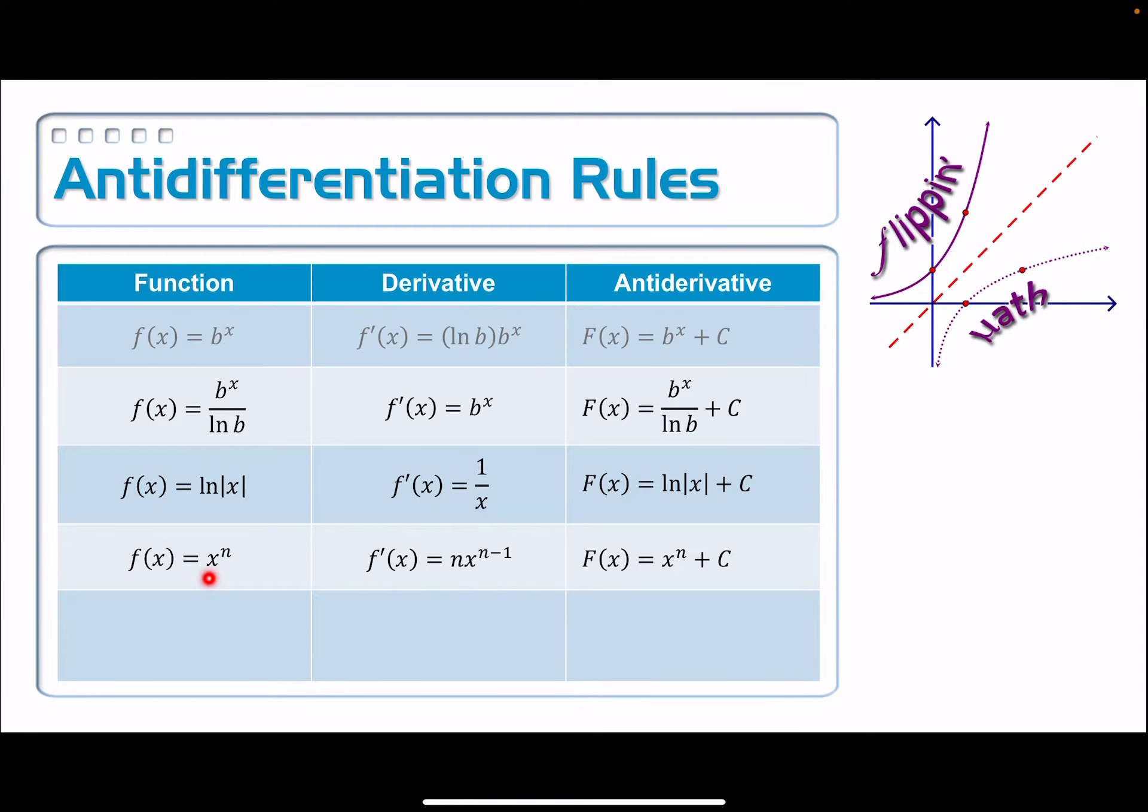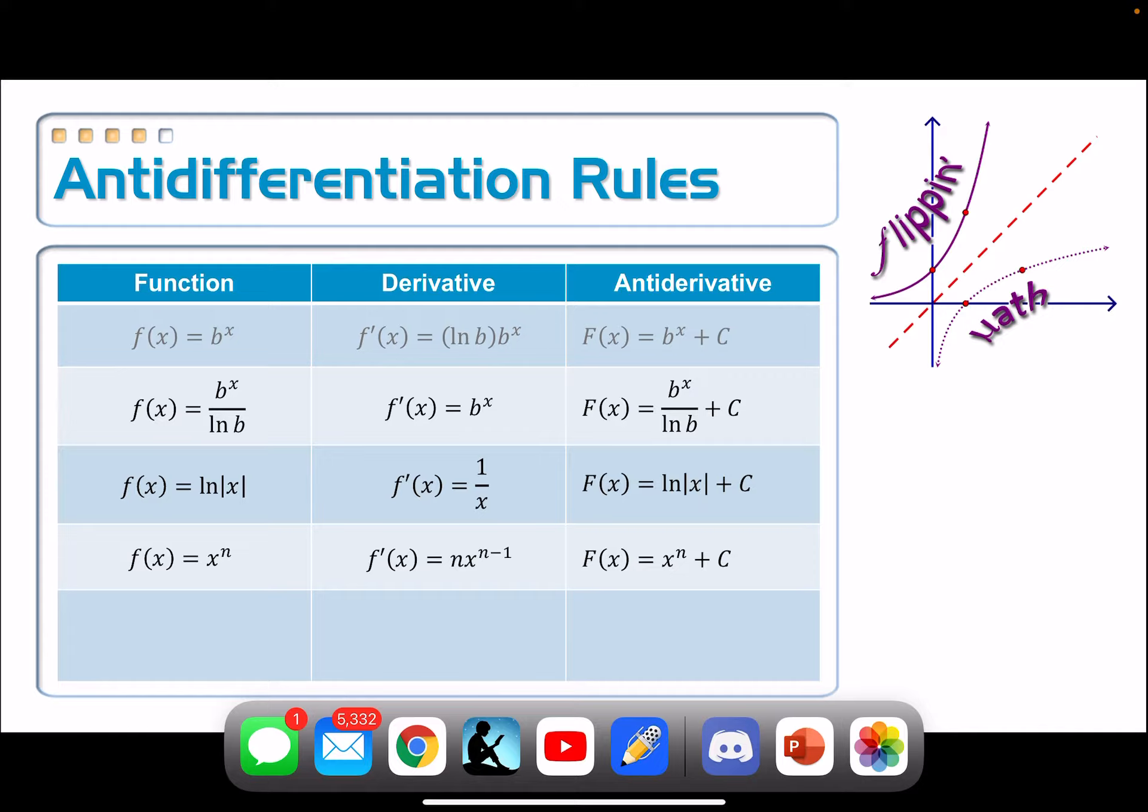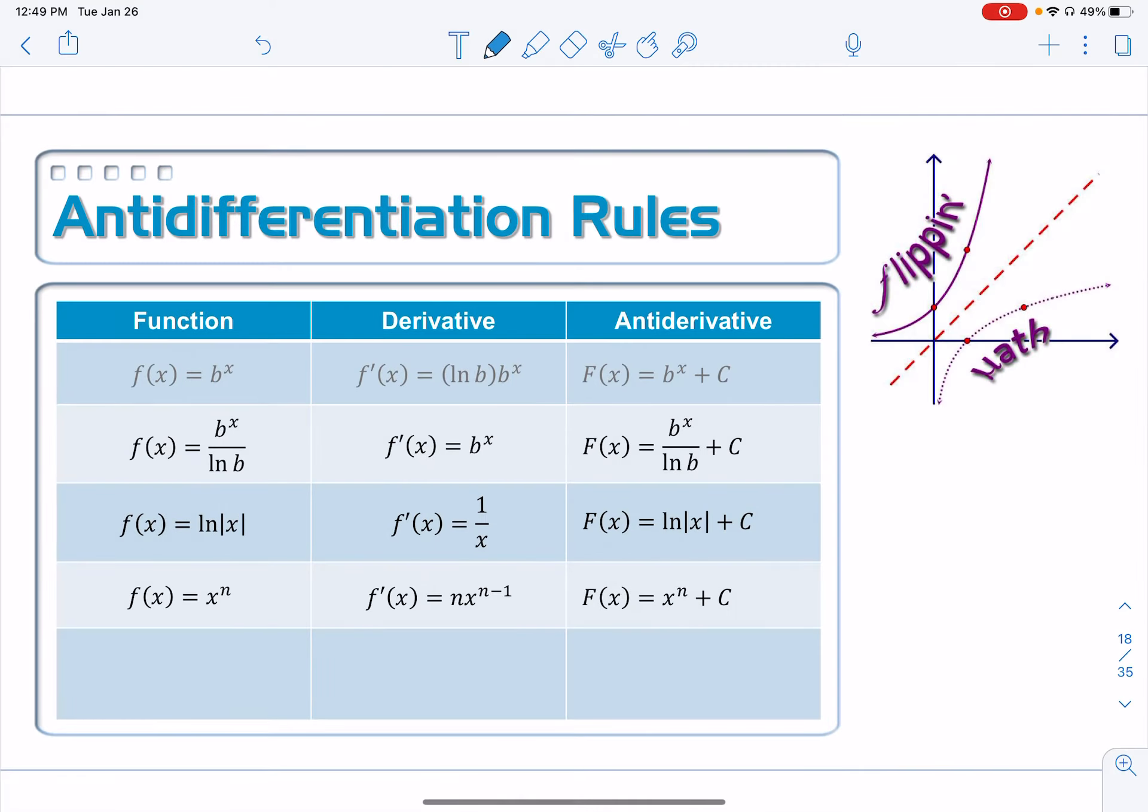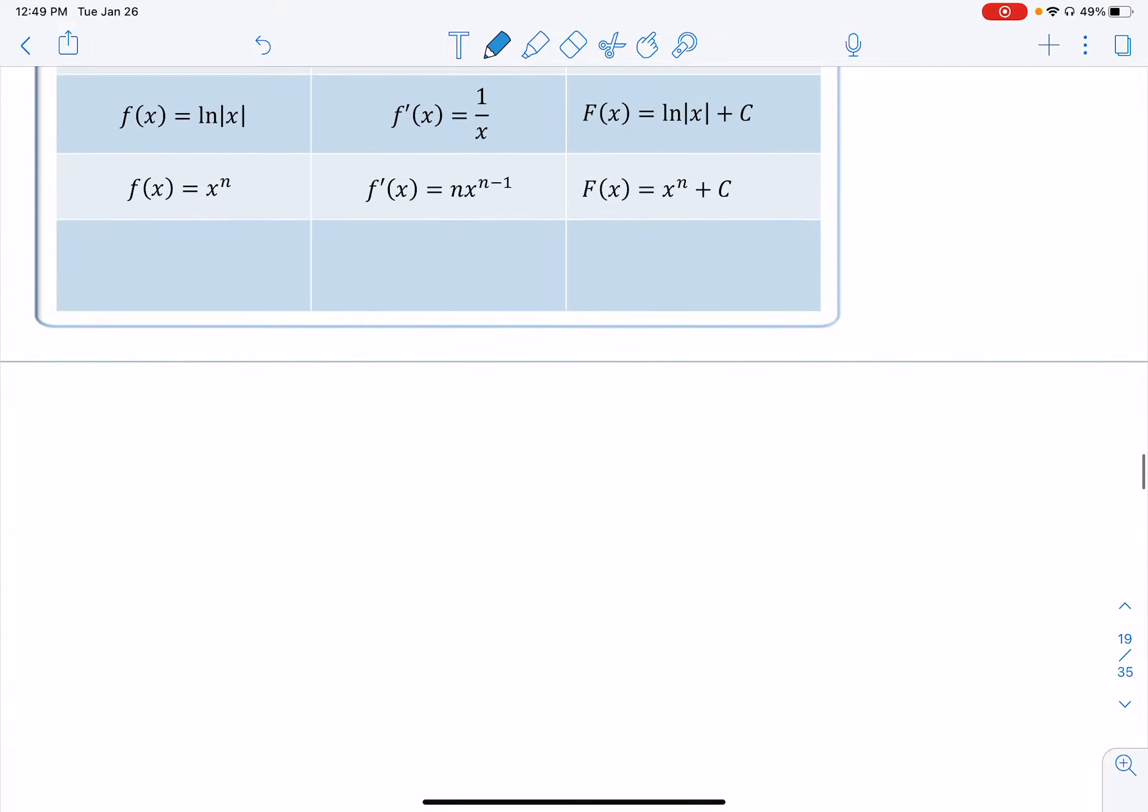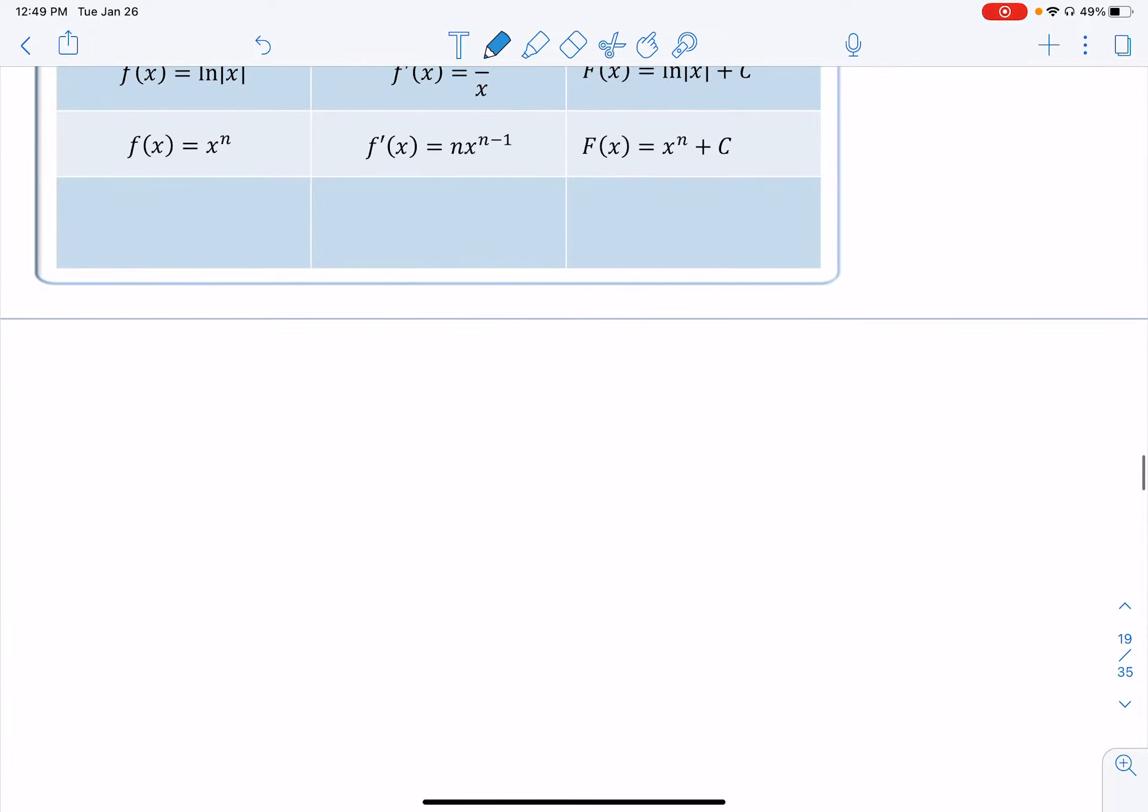And we want to know what is the antiderivative of x to the n. So let's take a look at that. Let's see if we can come up with that. We should probably already have a feel for it from some of the other questions that we did. But let's formally find it here.